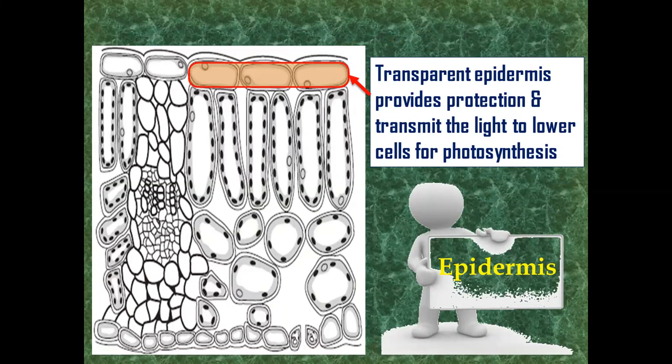Below the waxy cuticle, there is the transparent epidermis, which provides protection and transmits light to the lower cells for photosynthesis. So there is no chloroplast in epidermis.